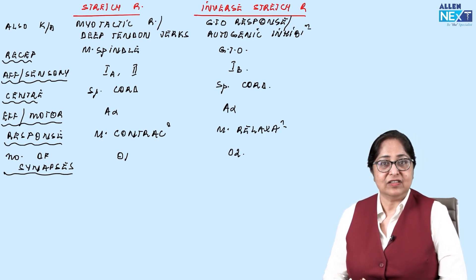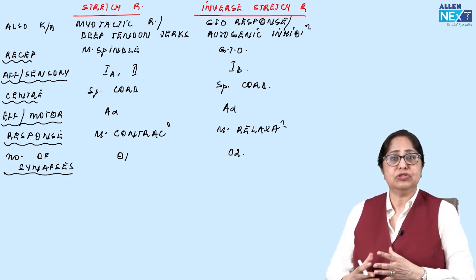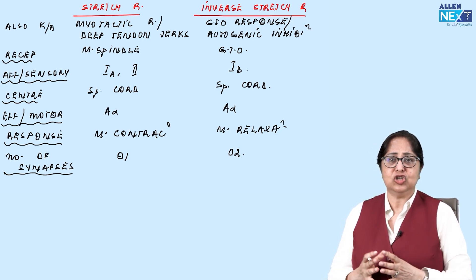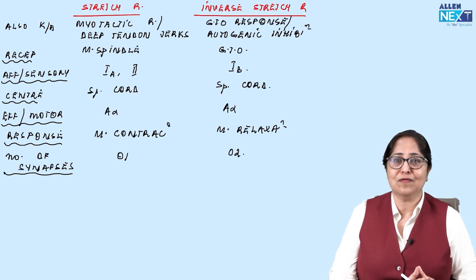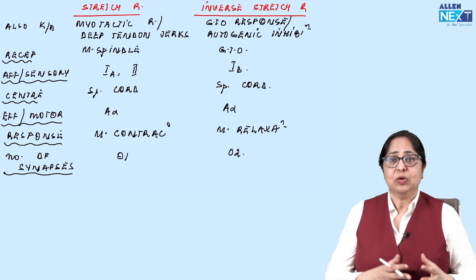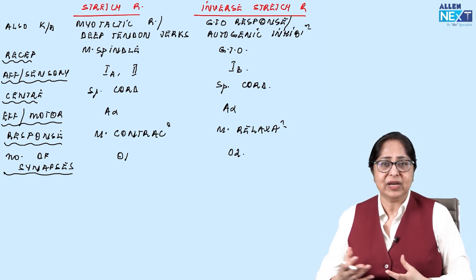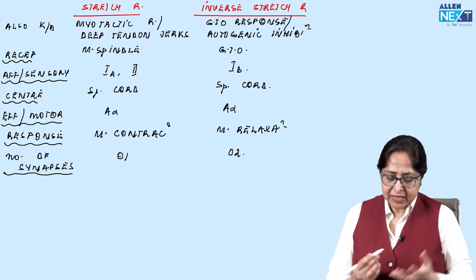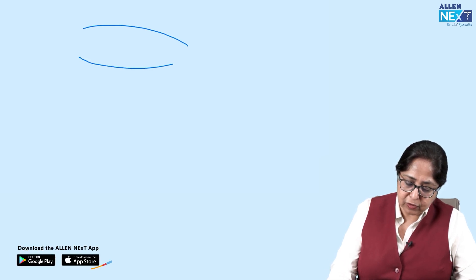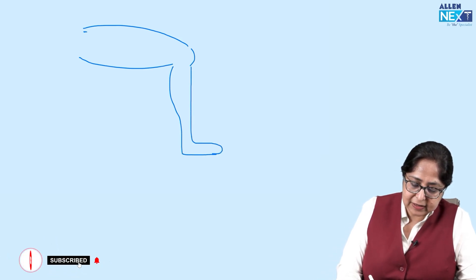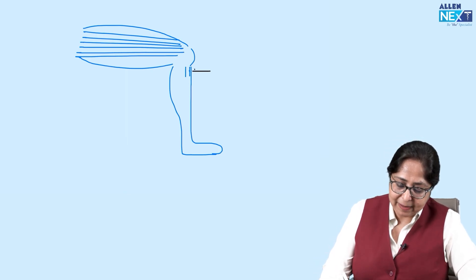Stretch reflexes are your deep tendon jerks, which are a critically important component of the central nervous system examination — the knee jerk, ankle jerk, biceps jerk, and brachioradialis. To elicit the knee jerk, a typical example of a stretch reflex, we tap on the quadriceps tendon. The quadriceps tendon is inserted into the tibial tuberosity. We take the knee hammer and tap on the quadriceps tendon.